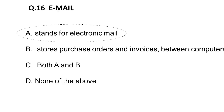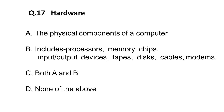The next question: hardware is a physical component of a computer. It includes processors, memory chips, input/output devices, tapes, discs, cables, and modems. The correct answer is C — it includes both A and B.